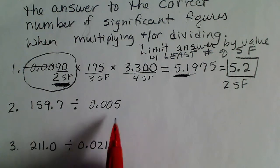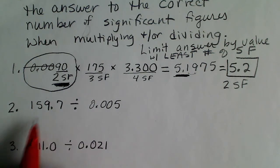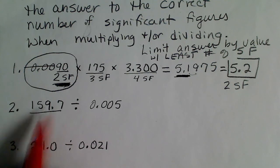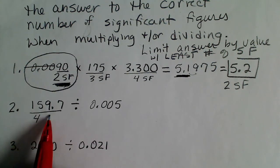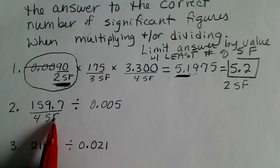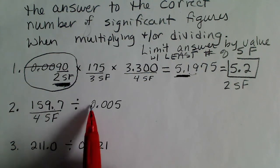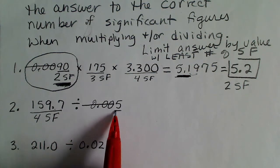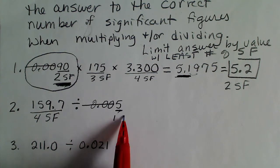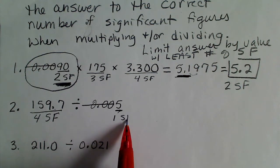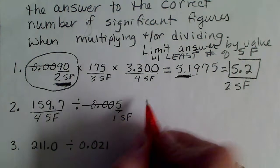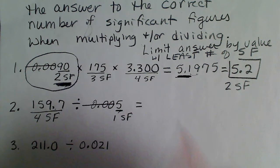In this next example, it's very easy when there are no zeros — it's not difficult to determine the significant figures. This value has four significant figures. If we divide this by 0.005, that is only one significant figure, since all of the leading zeros are always crossed out as not significant.